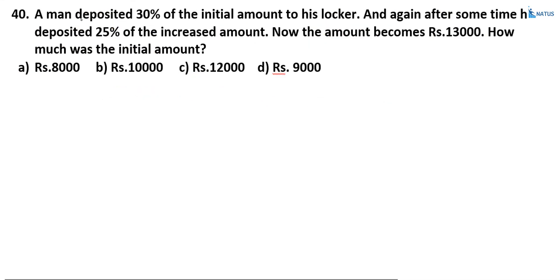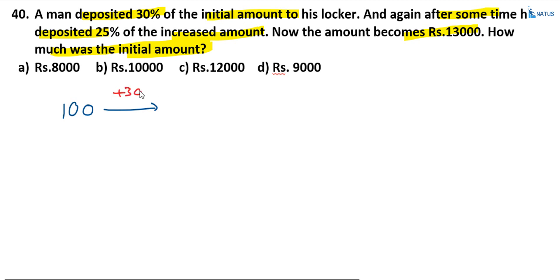A man deposited 30% of the initial amount to his locker, and again after some time he deposited 25% of the increased amount. Now the amount becomes 13000. How much was the initial amount? Suppose the initial amount is 100. He increases 30%, so 30% of 100 is 30, and the amount becomes 130.